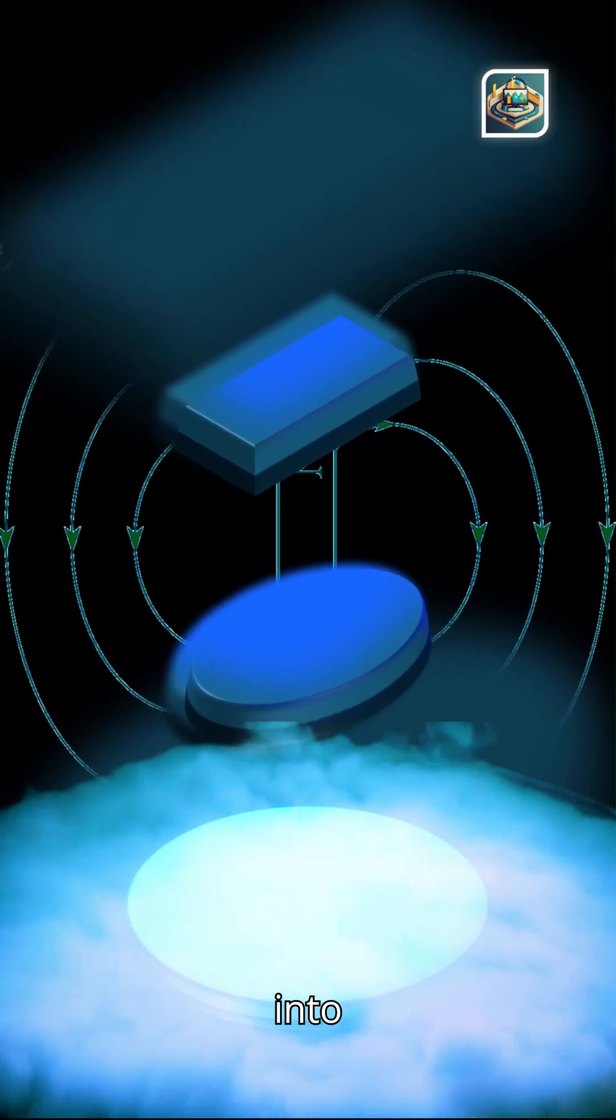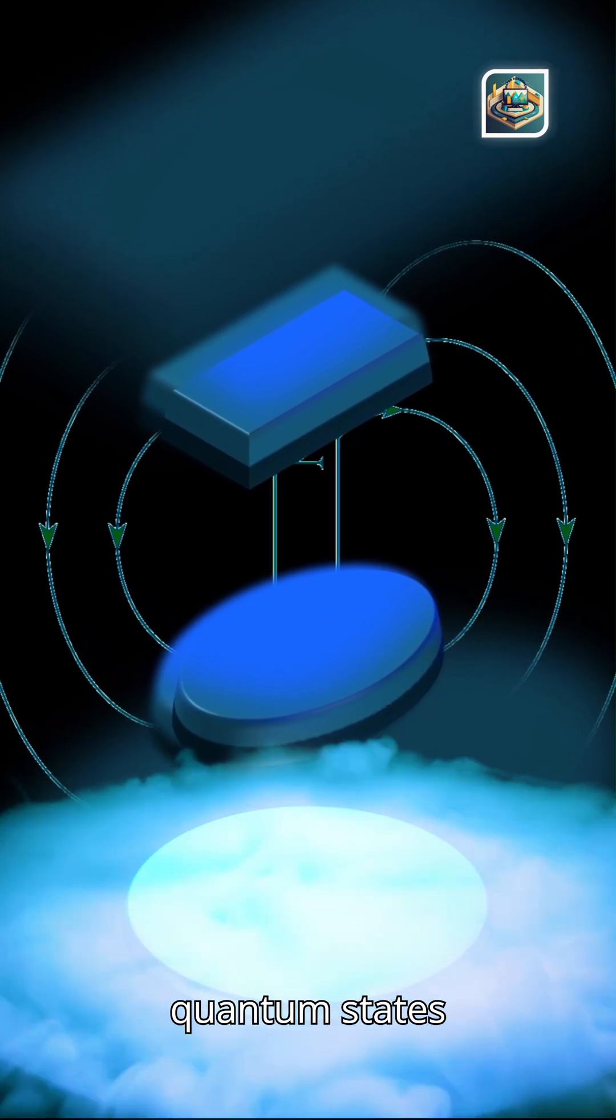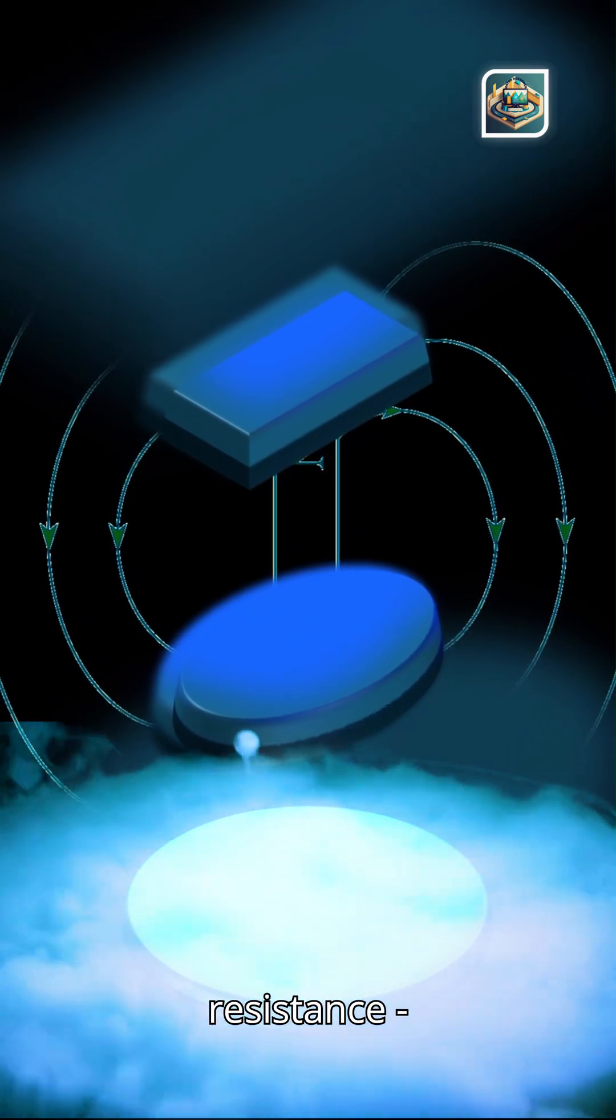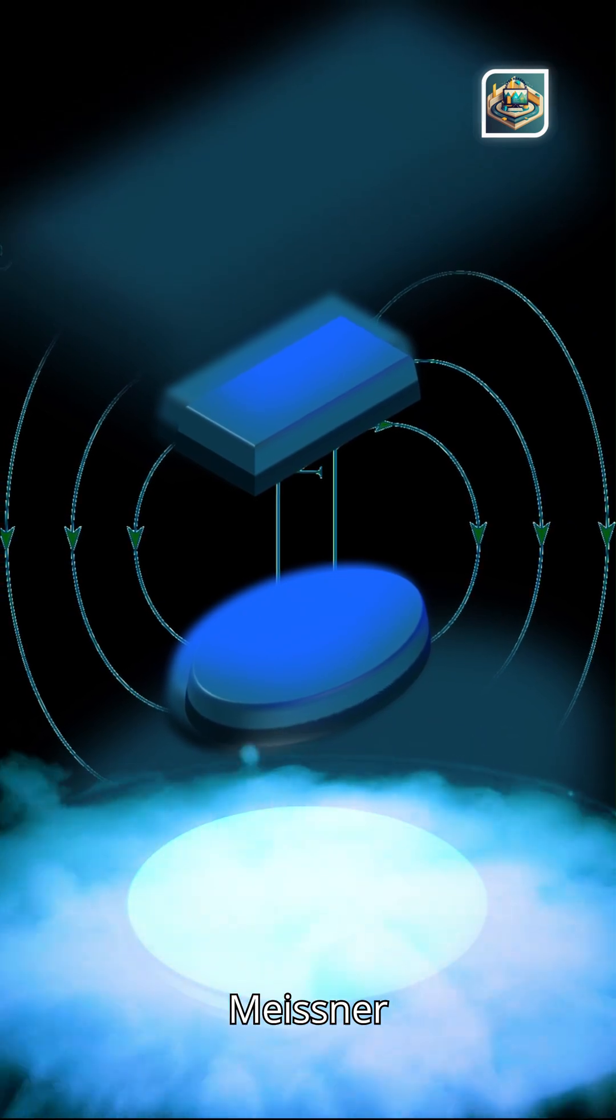Let's look into superconductors and levitation. One of the most famous macroscopic quantum states is superconductivity. When cooled, materials lose all electrical resistance and even levitate magnets in a quantum dance called the Meissner effect.